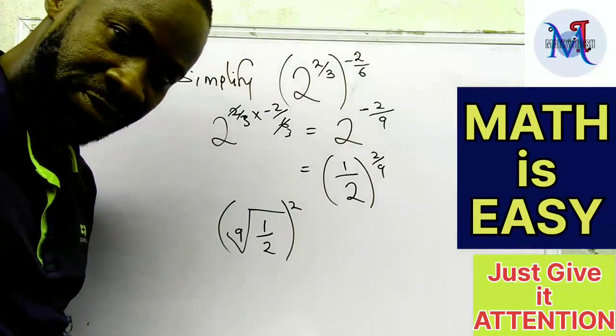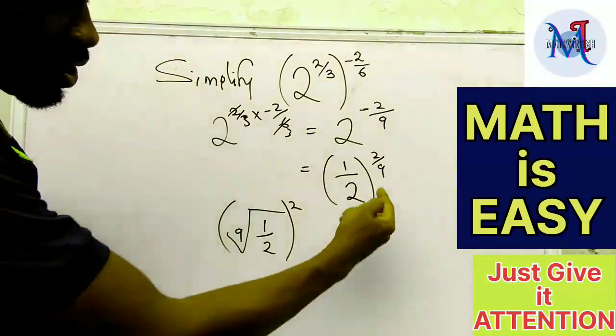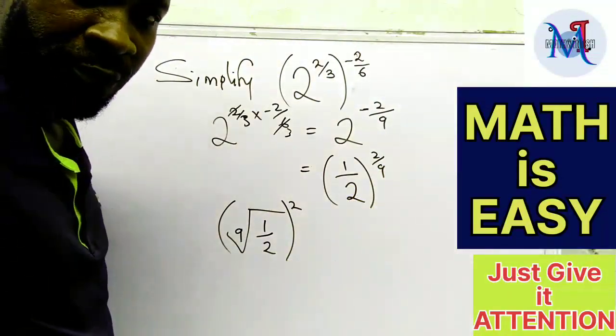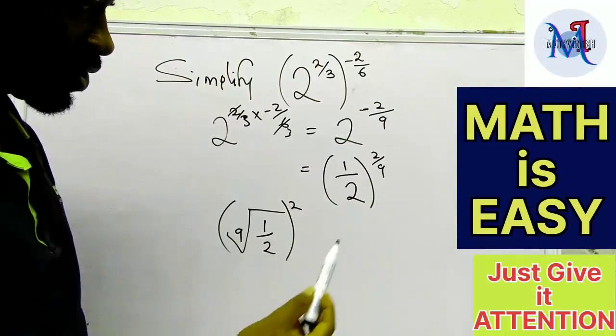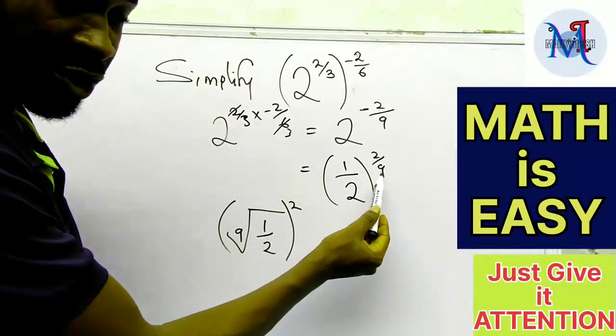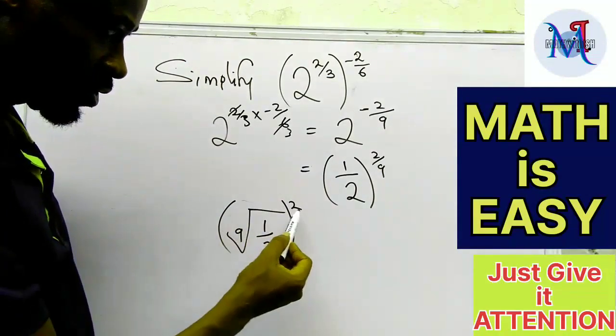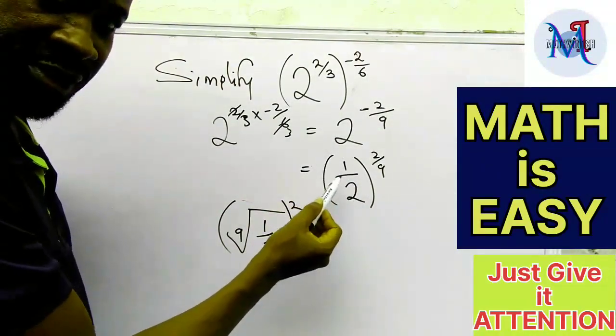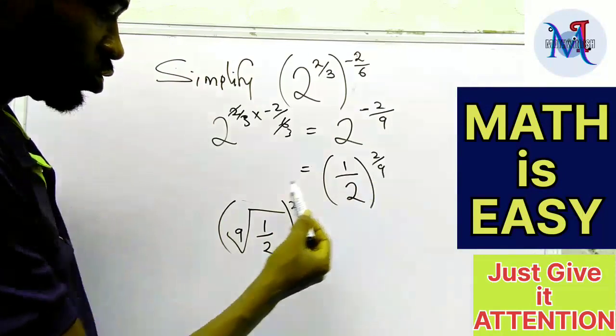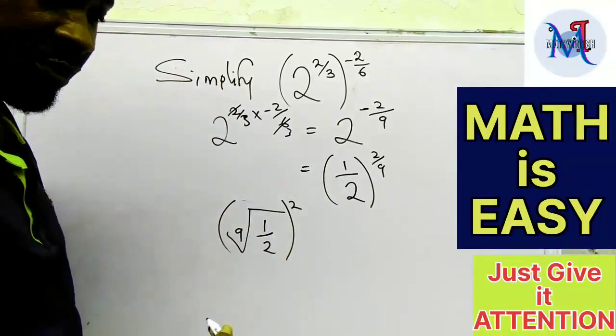So let me repeat this particular aspect for those of you who don't know how to apply the functional law. All you have to do is look at the denominator of this power. The denominator here is 9. So this denominator becomes the root of the base. And then this numerator, which is 2, becomes the power. Can you see that?